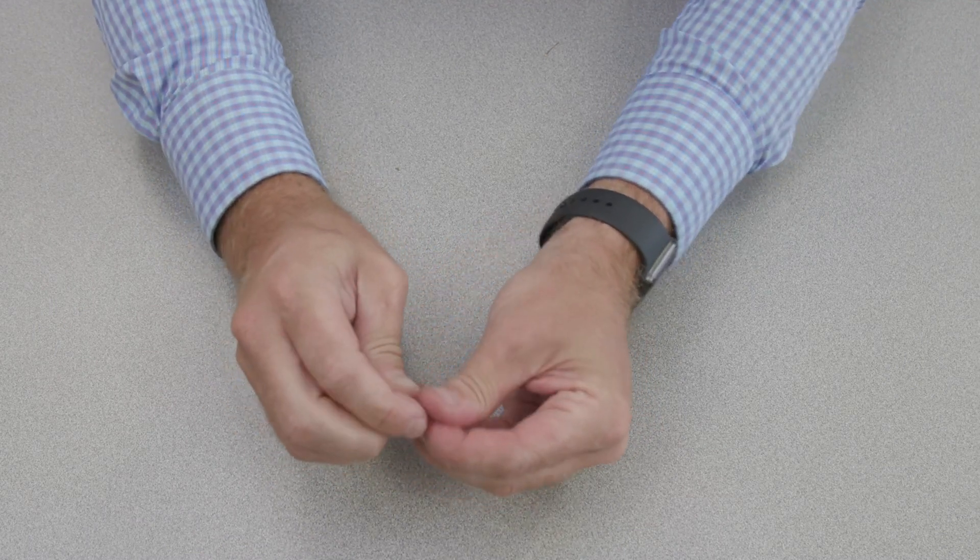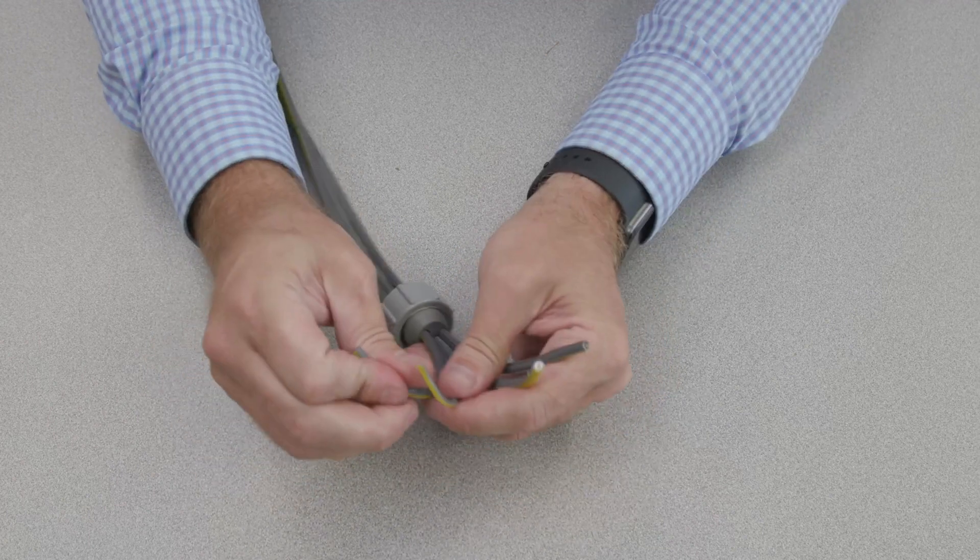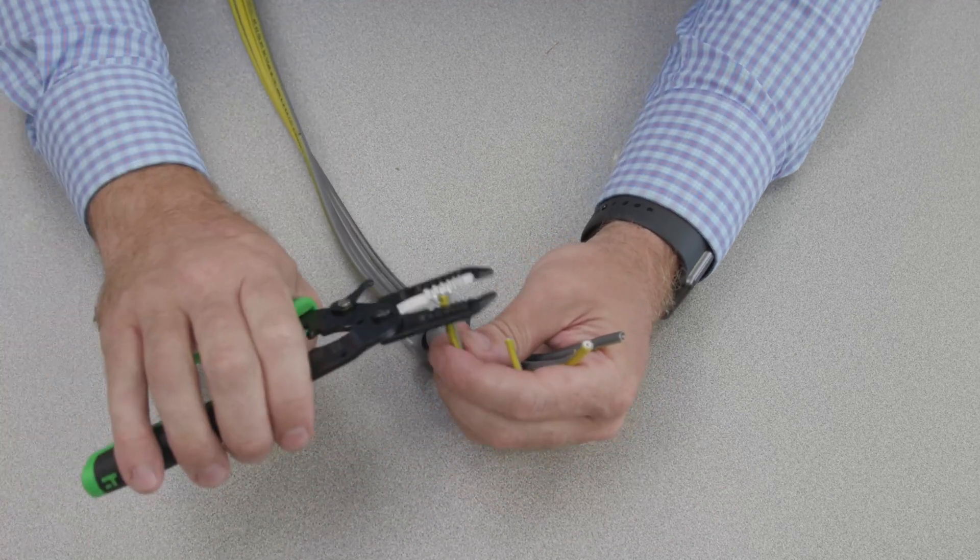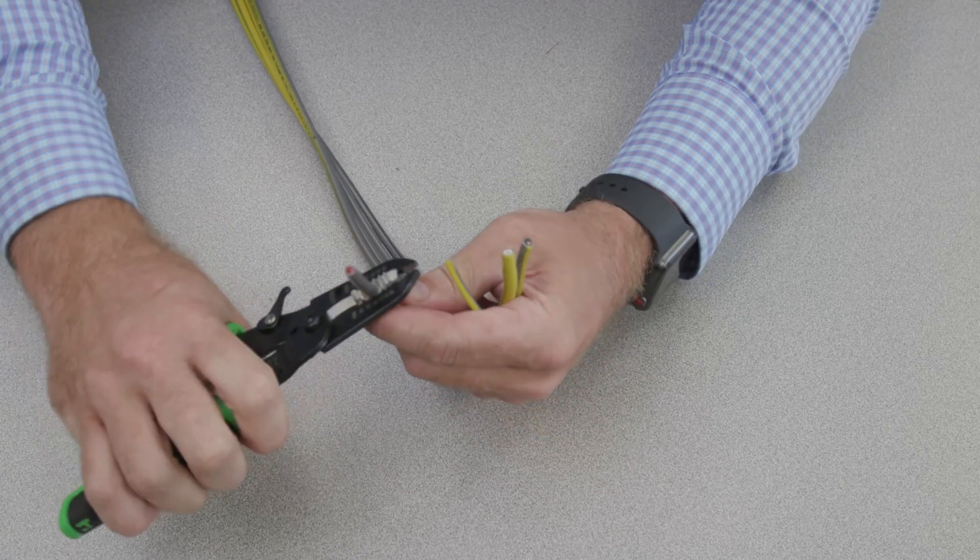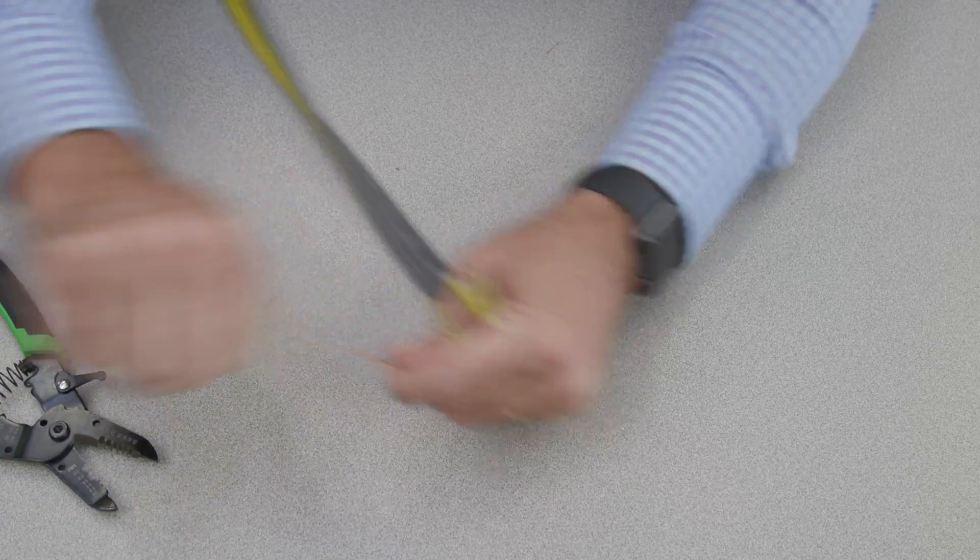Once you peel them apart, you have them separated out. You grab your stripper and strip away. There you have it.